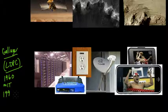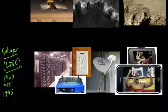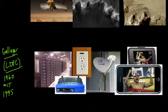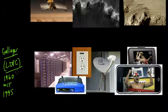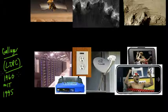Even though Gallager went on to become a very famous communications mathematician working in information theory, his codes were forgotten — they seemed too inefficient for computers of the time and were seen as impractical. People forgot about them for nearly 40 years. Then, around 1995 or 1996, David MacKay and Radford Neal rediscovered Gallager's codes and found that they performed extremely well — as well as turbo codes and in some cases even better.